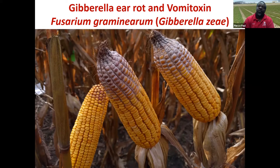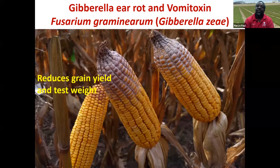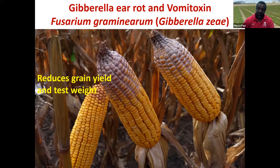Typical symptoms again are pinkish-white mold growing towards the tip of the ear. Once those kernels are badly affected, they become shriveled and lightweight, causing a reduction in grain yield and test weight because the fungus draws all the nutrients out of them. The biggest problem with this disease, however, is contamination of grain with mycotoxins — specifically vomitoxin, which is the most frequent and the one we're most concerned about in most years.